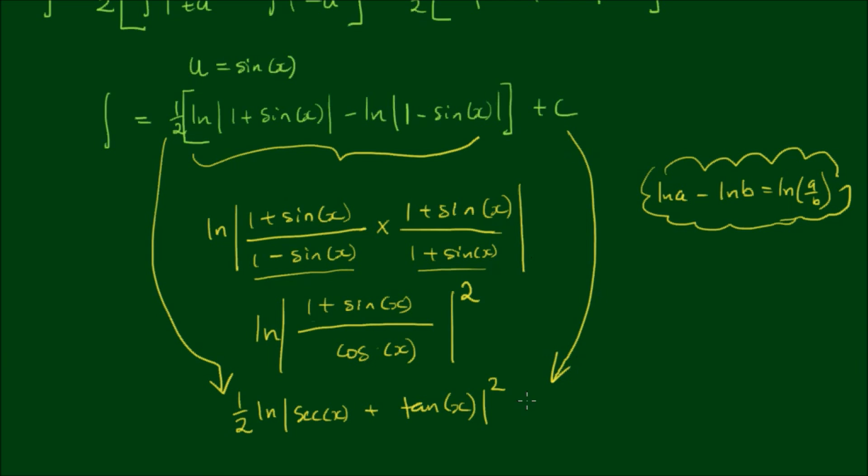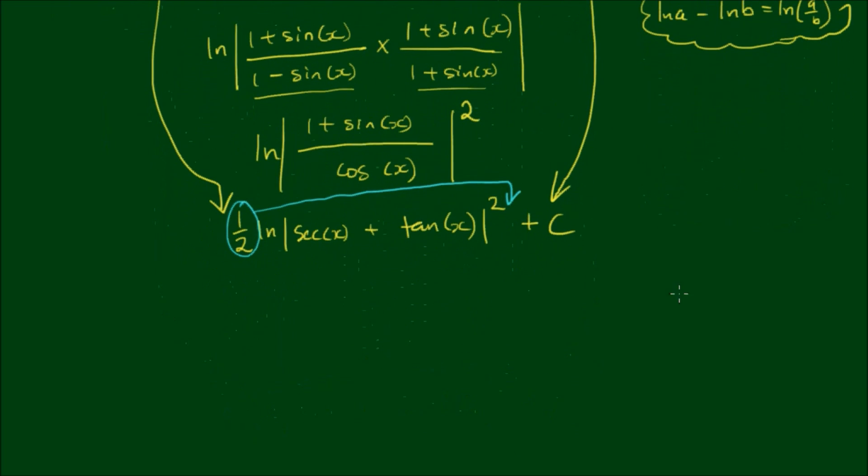And we still have this plus c that we need to add. And now if we use another log law, we can say this a half we can bring to the top. We can make that into a power. So we write this as log of sec x plus tan x all squared and times the half that we've brought up from the front. And the 2's cancel. The integration constant we copy down. So finally we can say that the integral of the sec x is equal to the log of sec x plus tan x plus c.